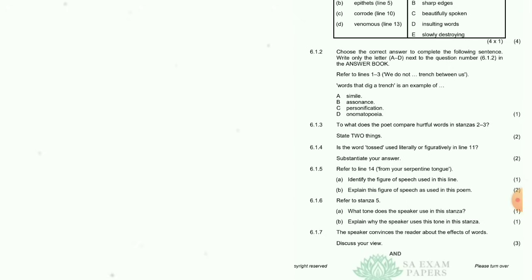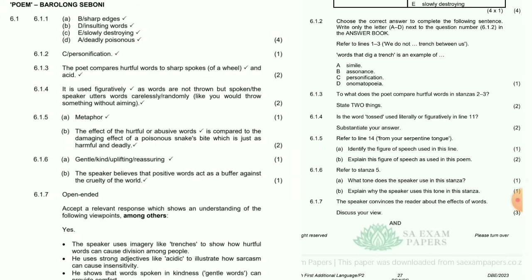Question 6.1.2: Choose the correct answer to complete the following sentence — write only the letter A to D. Refer to lines 1 and 3 — 'We do not trench between us words that dictate.' Trench is an example of C — personification.